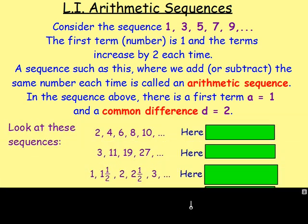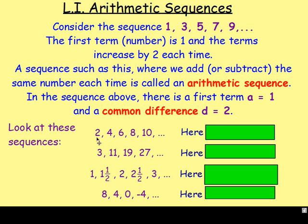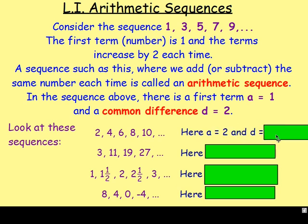Let's look at the following sequences. For the first one, a is your first term. The first term is 2, so a equals 2. And d equals... what is d? d is the common difference. Because it's going up in twos, d is also going to be 2.